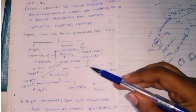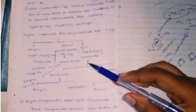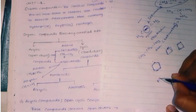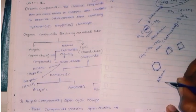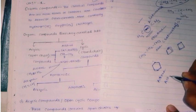Next is unsaturated. Alkenes are unsaturated compounds, as well as alkynes. Alkenes contain double bonds and alkynes contain triple bonds.